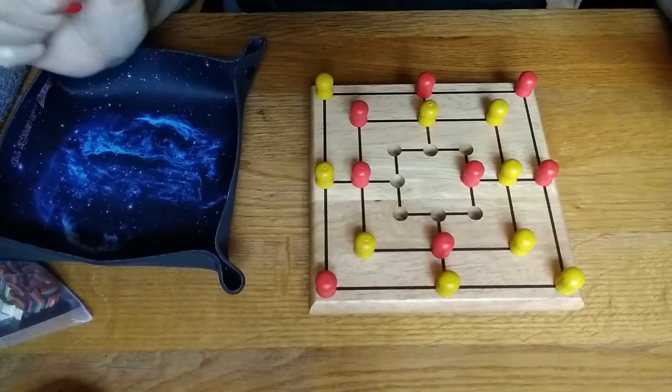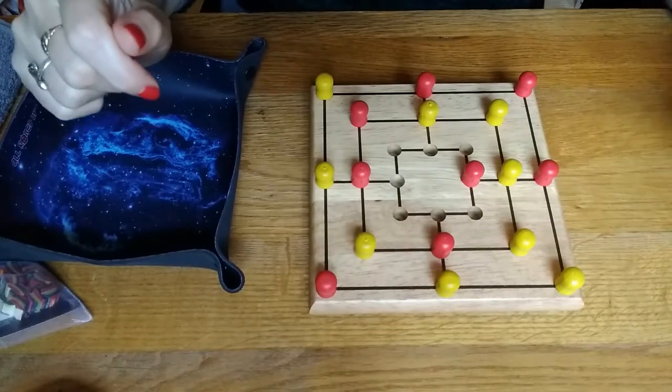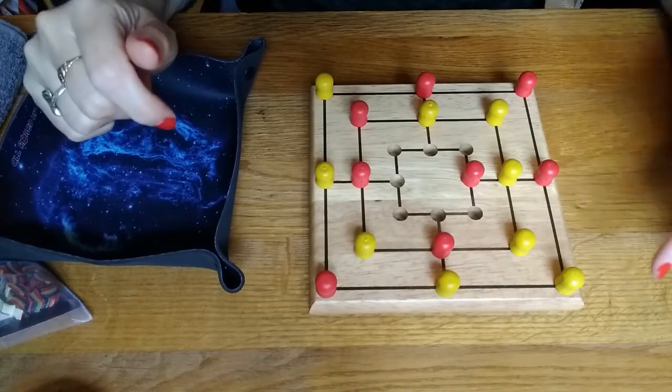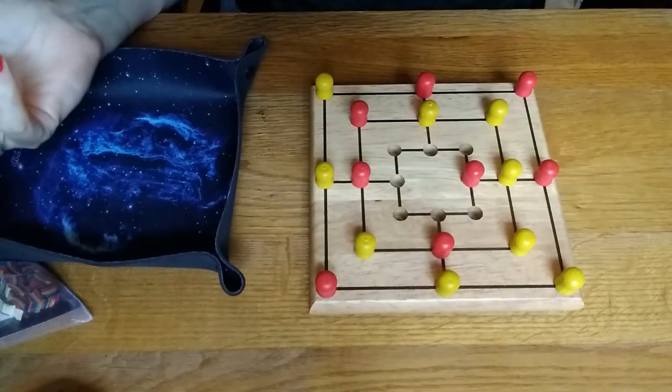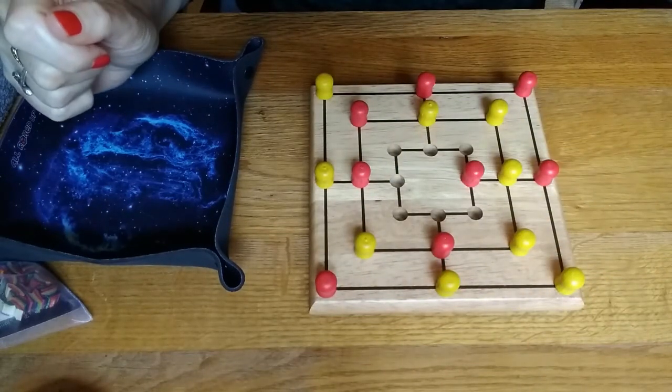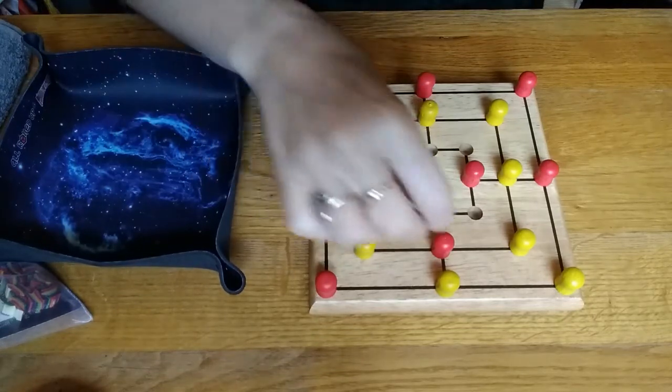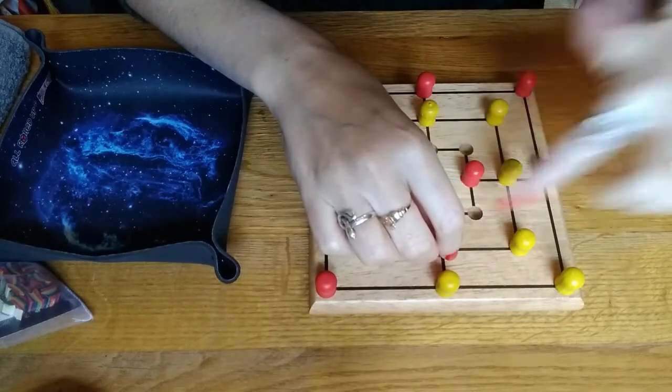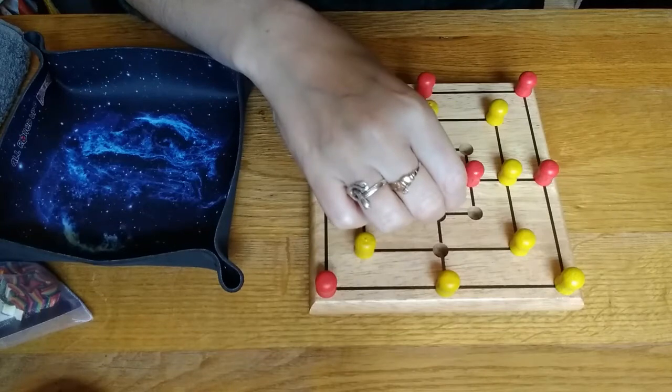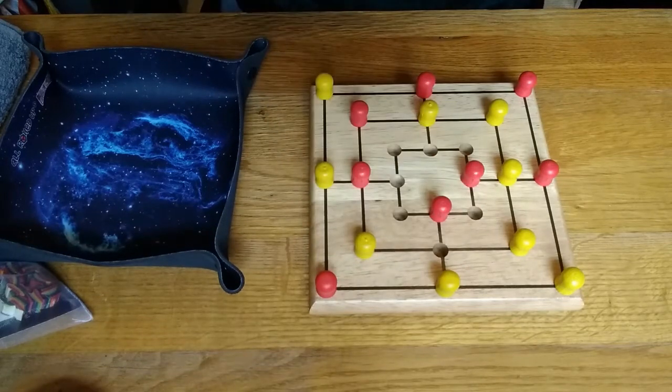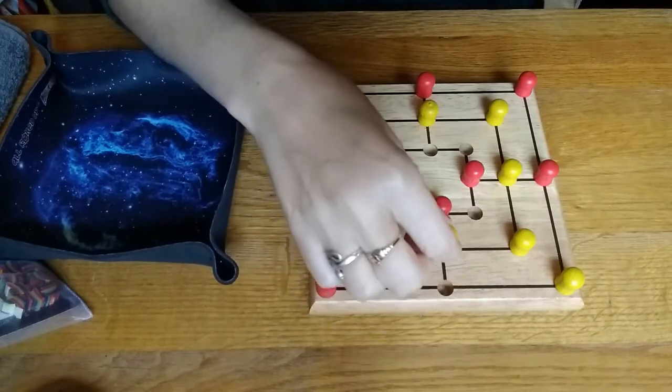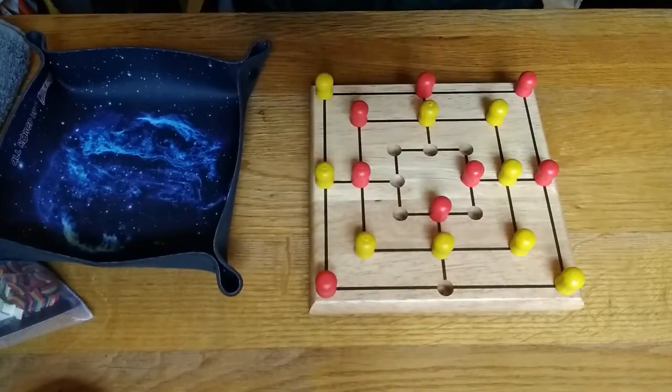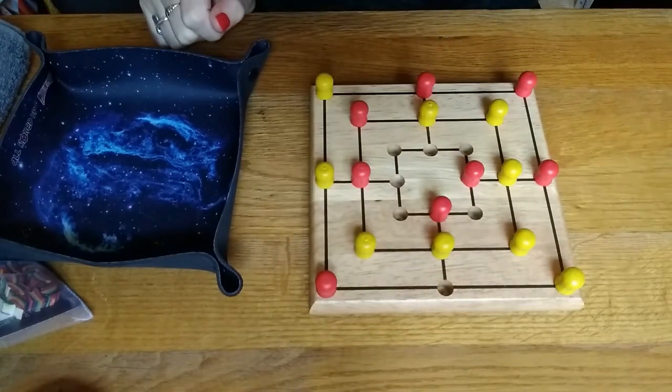Phase two is where you move your pieces one place. And again, you're trying to make those mills so that you can remove the people. So for instance, you move along the lines. So I might try and make my line of three here. So I might move this one to here. However, if I do that, that's allowing this yellow to make a mill again. So then they would remove a red piece.